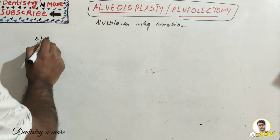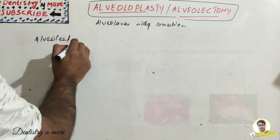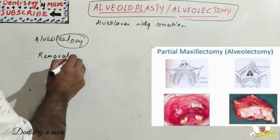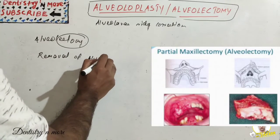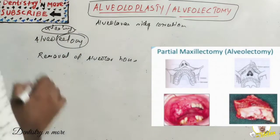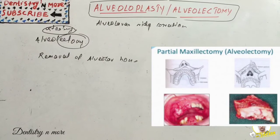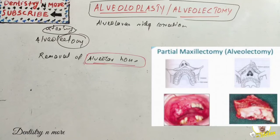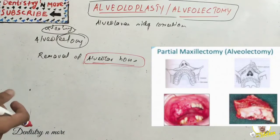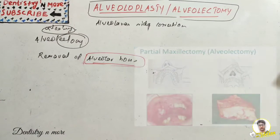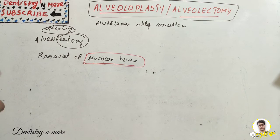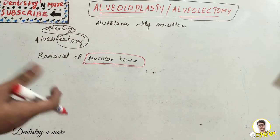Alveolectomy — 'ectomy' indicates removal, so it is the removal of alveolar bone, similar to how ostectomy is removal of bone. The basic procedure is: after extraction, whenever there is presence of any sharp margins at interdental, interseptal, or labiobuccal alveolar crest, they should be trimmed with a bone rongeur or a round bur and smoothed with a bone file.